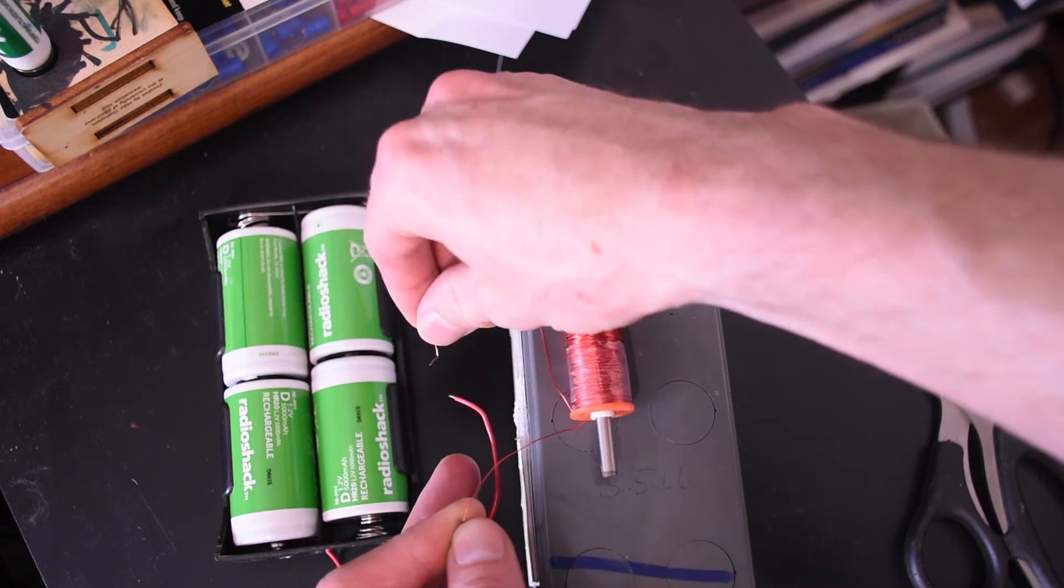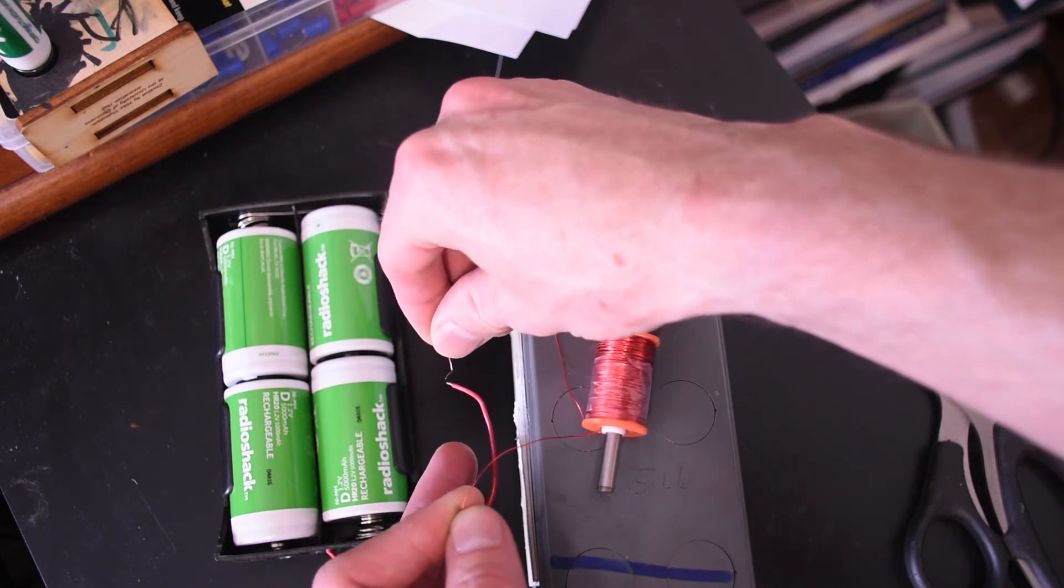Now these four D cells that are in series only put out 6 volts, but they still put out a decent bit of current.